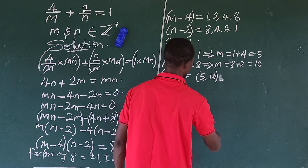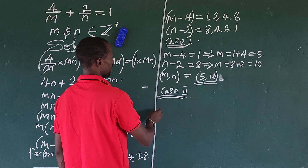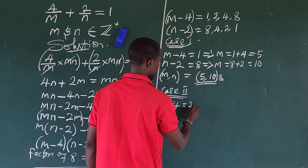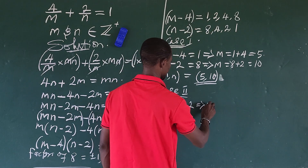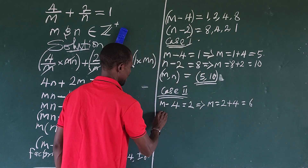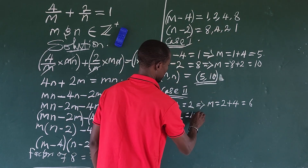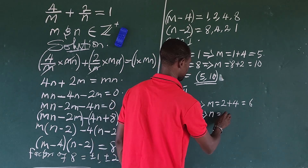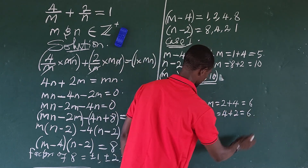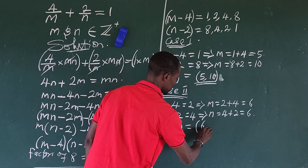Case 2: m minus 4 equals 2, so m equals 2 plus 4 which is 6. And n minus 2 equals 4, so n equals 4 plus 2 which is 6. So our second solution pair is (m, n) = (6, 6).